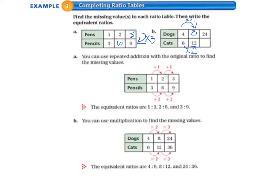4 times 2 gives us 8. Then you have to be careful because 8 times 2 doesn't give us 24 — you need to think about this: 8 times 3 does give us 24. So that would mean we need to multiply 12 times 3 to get the number of cats that go in this box, and that would be 36.